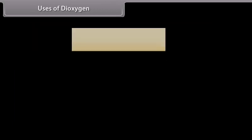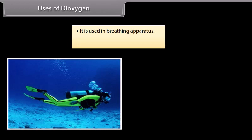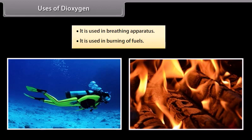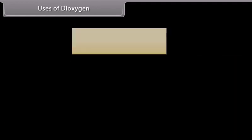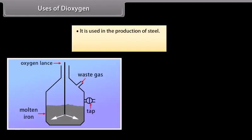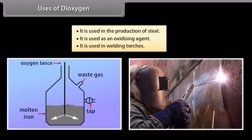Uses of dioxygen. It is used in breathing apparatus. Oxygen cylinders are widely used in hospitals, high altitude flying and in mountaineering. It is used in burning of fuels. It is used in production of steel. It is used as an oxidising agent. It is used in welding torches.